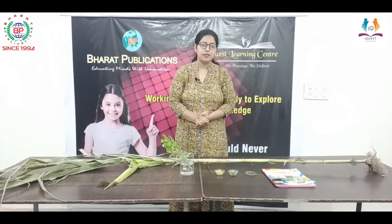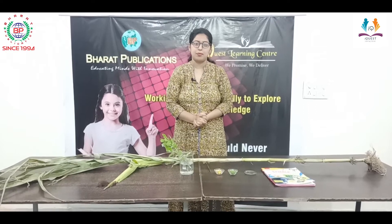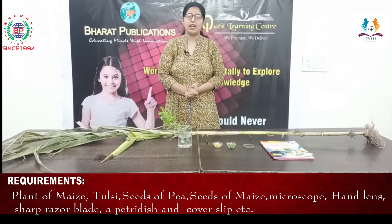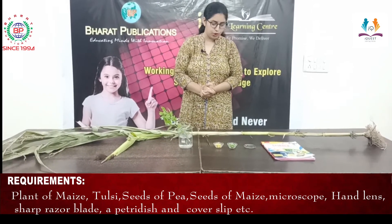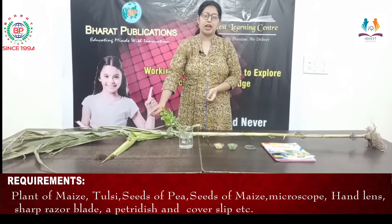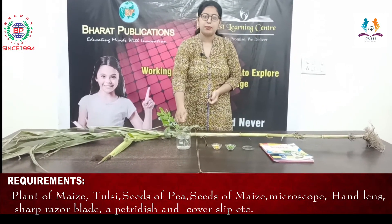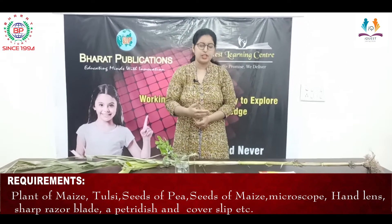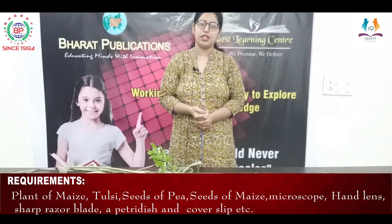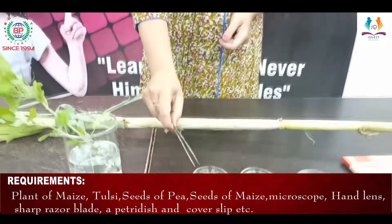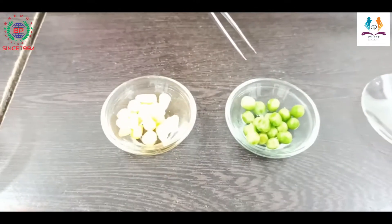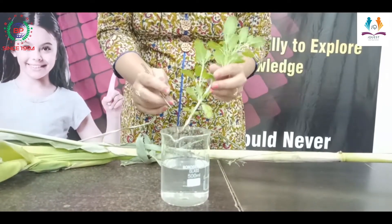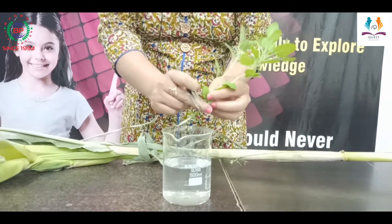We will study differences according to leaves, roots, and stem. For this activity we need one monocot plant and one dicot plant. For monocot I have taken the maize plant, and for dicot I have taken the tulsi plant, that is the holy basil. To study the seeds I have taken a seed of maize and a seed of pea.